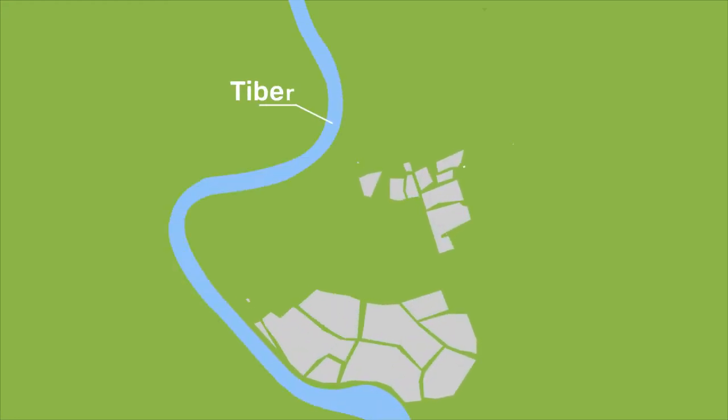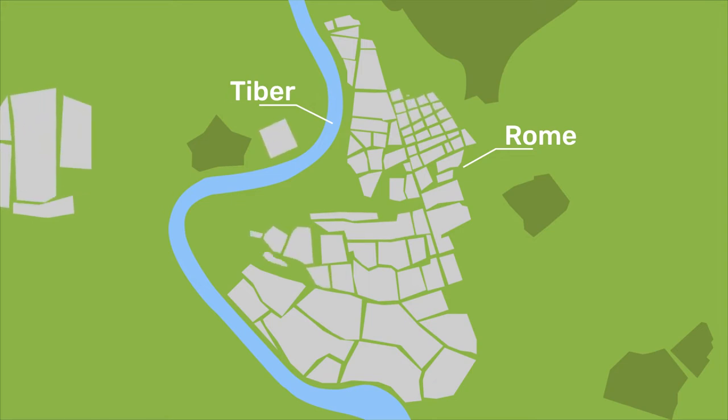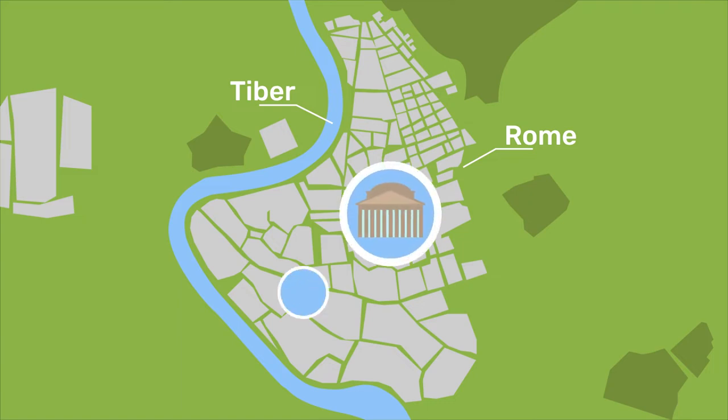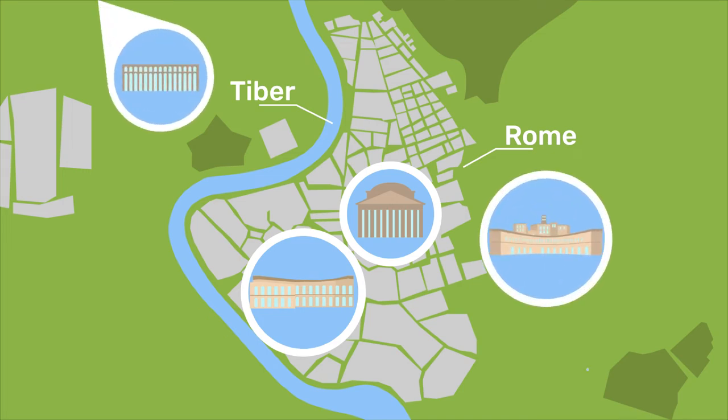The Roman Empire made extensive use of pozzolanic mortars and concrete, and it is the very good mechanical performance and durability of these materials that accounts for many still-standing monuments as the Pantheon, the Theatre of Marcellus, Trajan's Markets, the Pont du Gard, and to a lesser extent, the Colosseum.